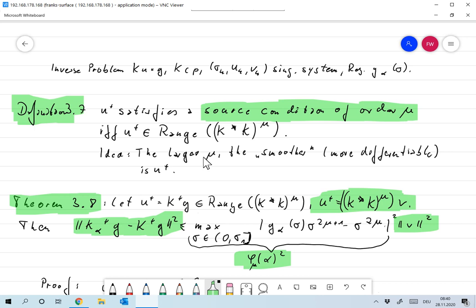The idea, of course, is the larger μ, the smoother or more differentiable is U+. And we already noted that for our problem of computing the antiderivative, when K is computing the antiderivative, then μ equals to 1 means that this is twice differentiable, that U+ is twice differentiable, and so on.